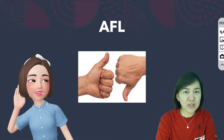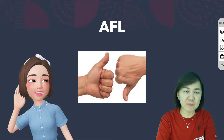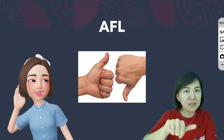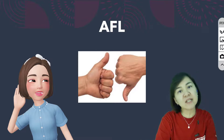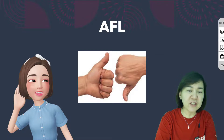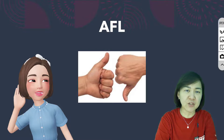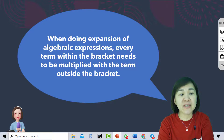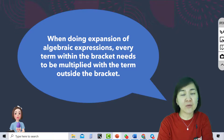Assessment for Learning: assess for yourself whether you can do combined operations involving expansion. If you can, thumbs up. If you're 50-50, thumbs horizontal - please re-watch the explanations. If you totally cannot, thumbs down. Please remember: when doing expansions of algebraic expressions, every term within the bracket needs to be multiplied with the term outside the brackets.